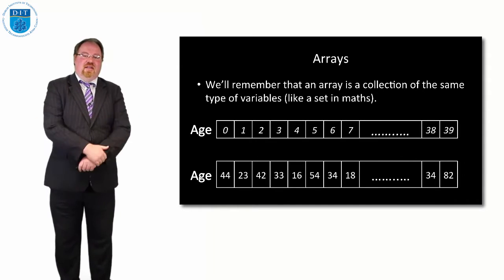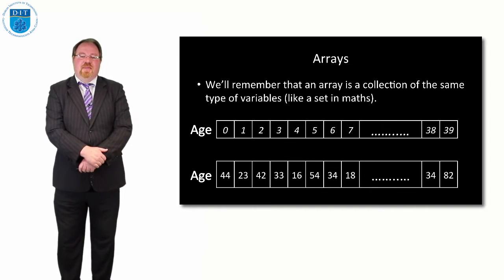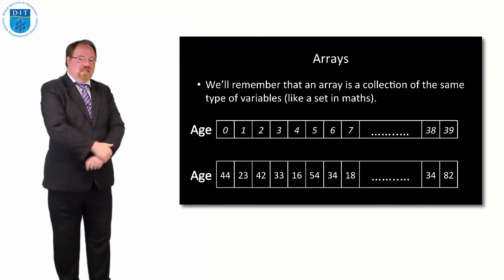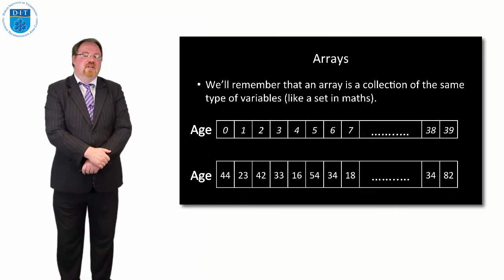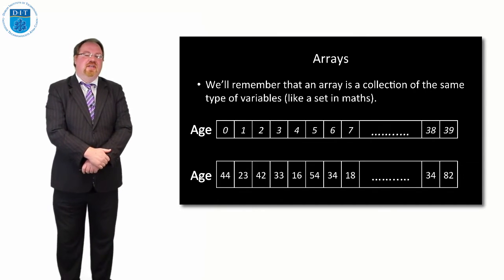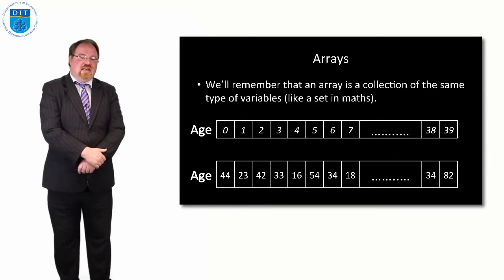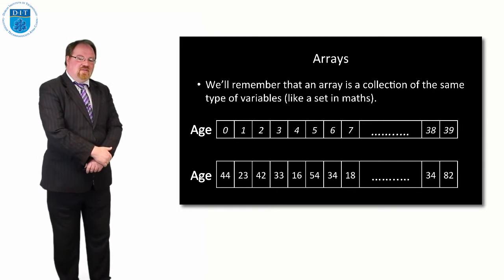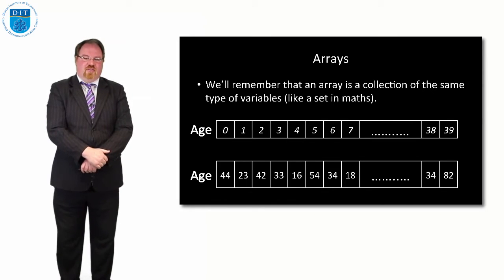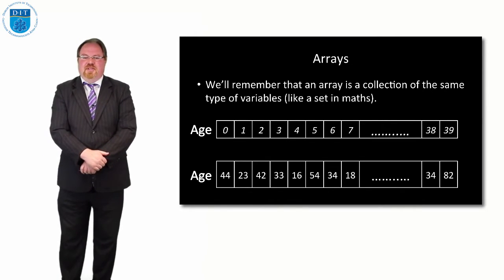An array is a collection of the same type of item, like a set in maths. The numbering goes from zero to the length of the array minus one. For an integer array, let's say it's called 'age' — the top row shows the location numbers and the bottom row shows the values stored within.